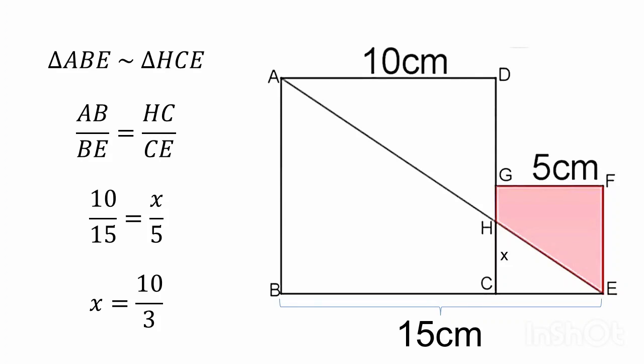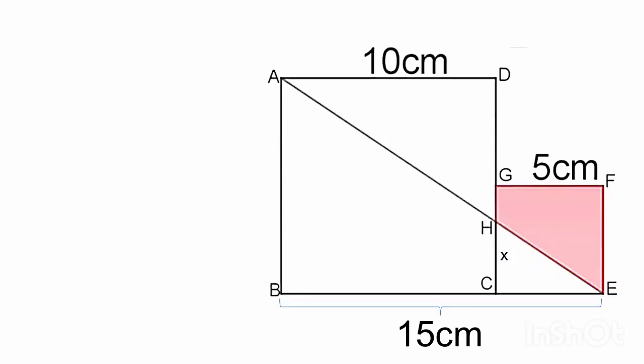Now we can calculate the shaded area which will be equal to area of the square GCEF minus area of the small triangle, triangle HCE.